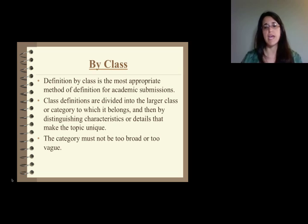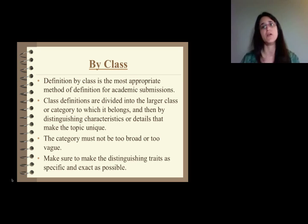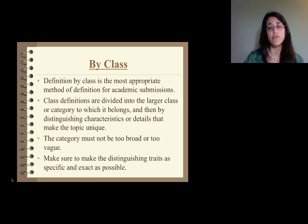Now you do have to make sure that your category doesn't begin too broad or too vague. If we just say baseball is a thing, that doesn't do any justice. We need to get as specific as we can be without giving it all away in one shot. Of course, make sure to make the distinguishing traits as specific and exact as possible. We could say that soccer uses a ball, but unfortunately so does football and golf and cricket and lacrosse. Just saying that it's a sport that uses a ball is not specific enough for defining a particular sport we may be looking at.